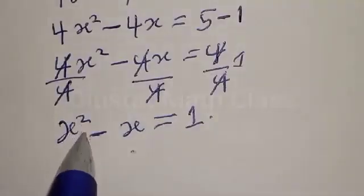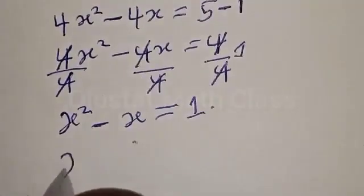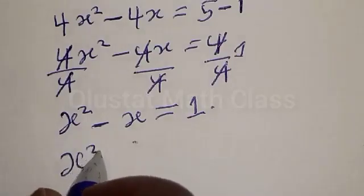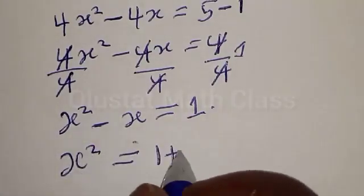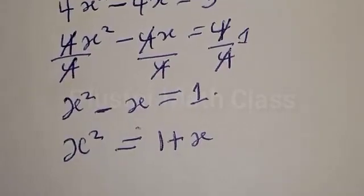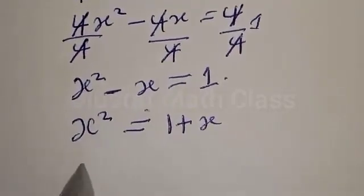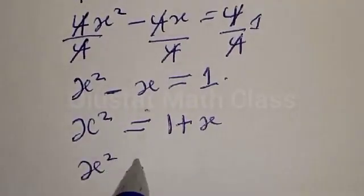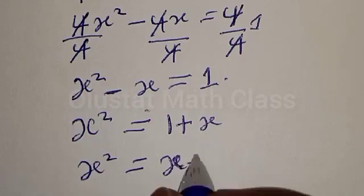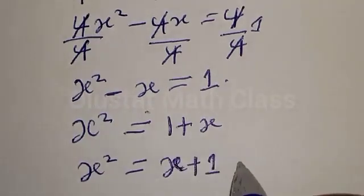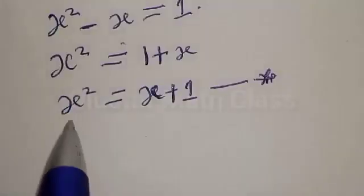Let's make s squared the subject of the formula. We have s squared is equal to 1 plus s, which can be written as s squared equals s plus 1. Let's call this equation star. We've gotten the value of s squared to be equal to s plus 1.